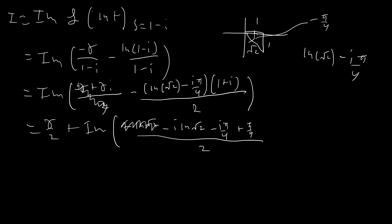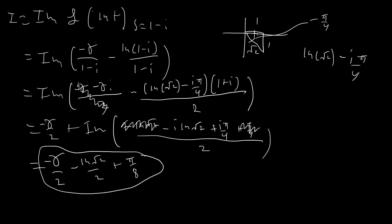We only care about the imaginary part, so the real parts drop out. Note: I made a sign mistake earlier — multiplying by 1 plus i on top introduced a negative sign, and two negatives combine to give a positive i pi over 4. So the imaginary part comes out to: gamma over 2, minus ln(sqrt 2) over 2, plus pi over 8. That's a remarkable result — from this integral we get an answer involving pi, natural log of 2, and the Euler-Mascheroni constant gamma.